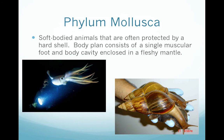Phylum Mollusca are soft-bodied animals that are often protected by a hard shell. Their body plan consists of a single muscular foot and a body cavity enclosed in a fleshy mantle. This includes squids, clams, snails — anything with a soft body and a hard shell around it.